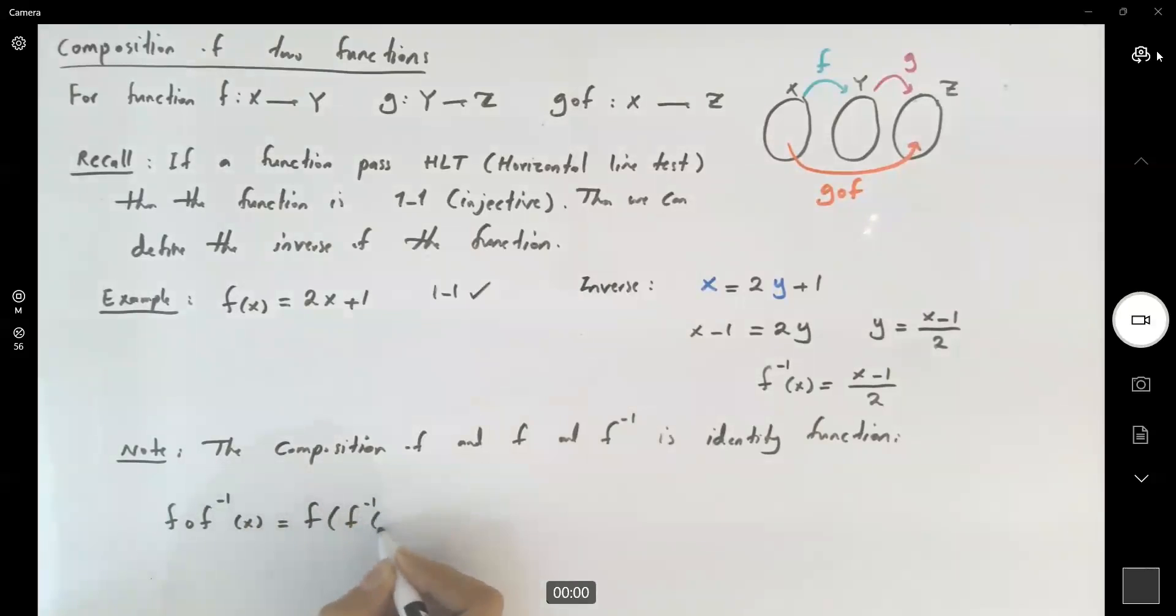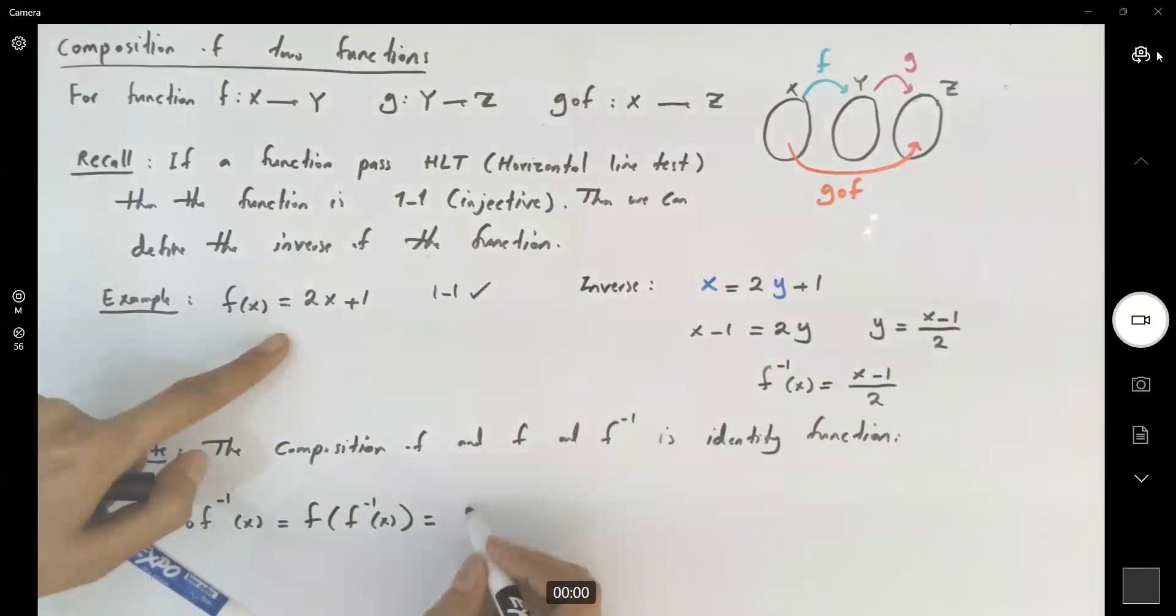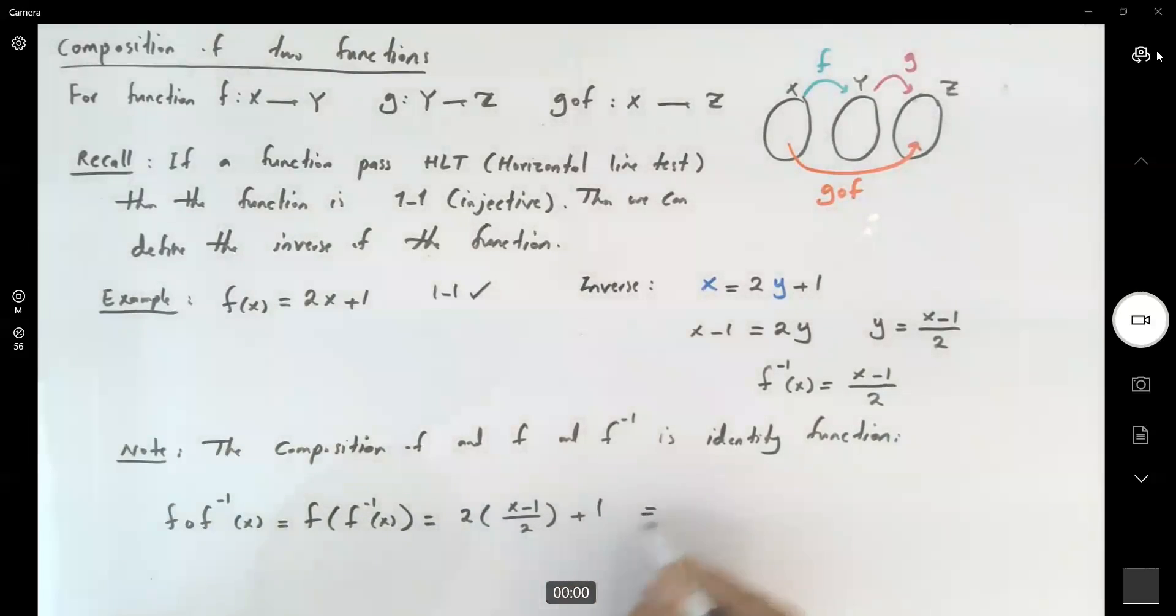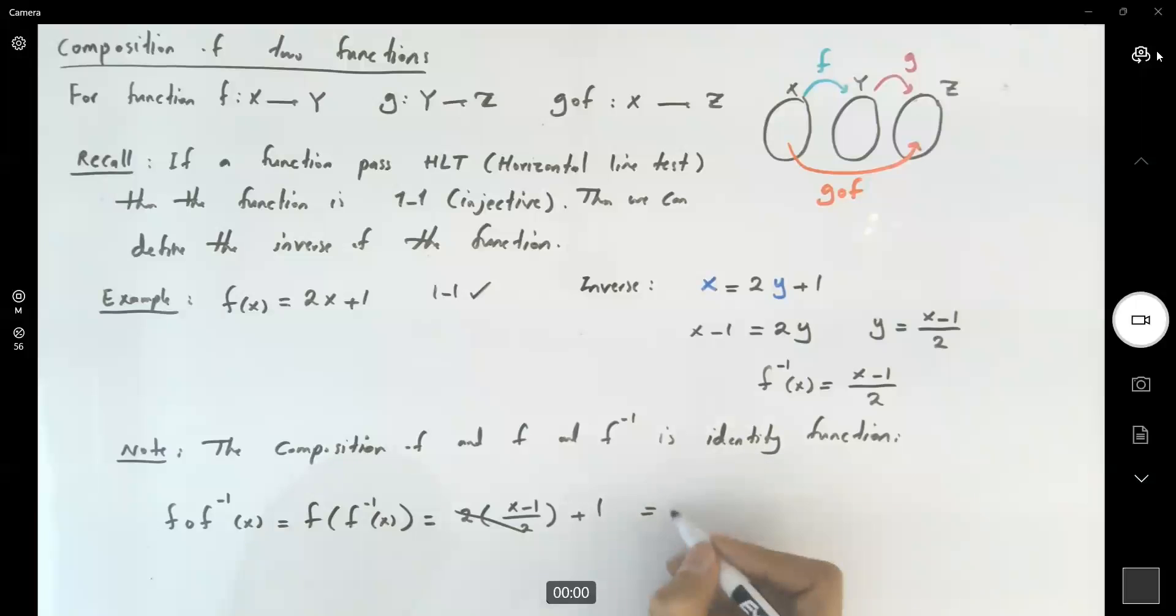f of inverse of f is equal to, you take your function, 2 times—instead of x, you're going to substitute the inverse, which is defined as follows: x minus 1 divided by 2 plus 1. So of course, you can cancel out 2 and 2. You're left with x minus 1 plus 1, which is just x.